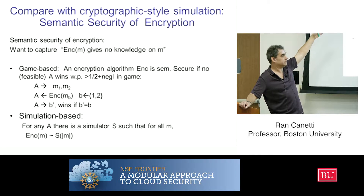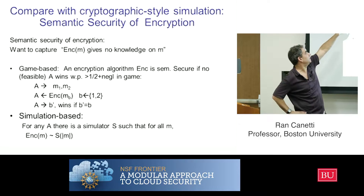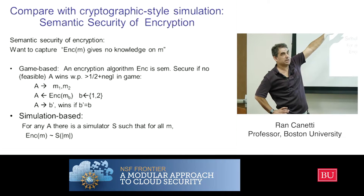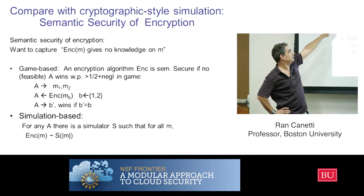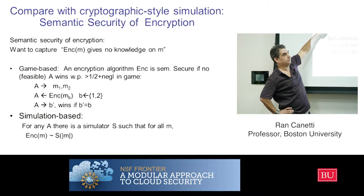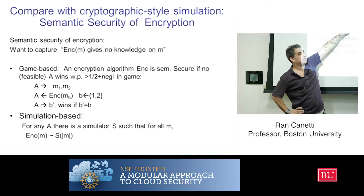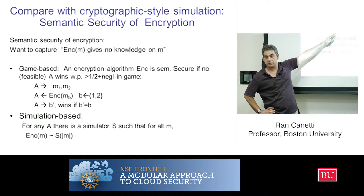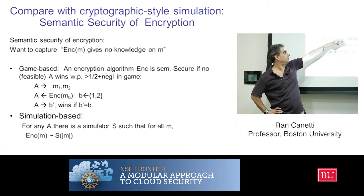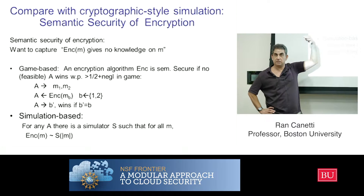How secrecy is defined in cryptography — there are two ways. One is game-based. How do you say that an encryption of a message M does not reveal information on M? One way is to say that no adversary wins in this game with probability more than half plus something small. The adversary gives out two messages, gets an encryption of one chosen at random, and has to guess which one it was — an encryption of B1 or B2. If it cannot guess with probability more than one-half, then we say the encryption is secure; it really hides the message.